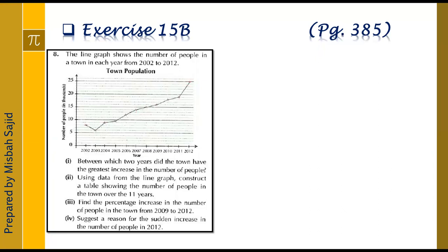Question number 8 is related to a line graph. The question says: the line graph shows the number of people in a town each year from 2002 to 2012. The line graph shows changes over a period of time. The x-axis shows years and the y-axis shows number of people given in thousands. Part 1 asks: between which two years did the town have the greatest increase in the number of people?